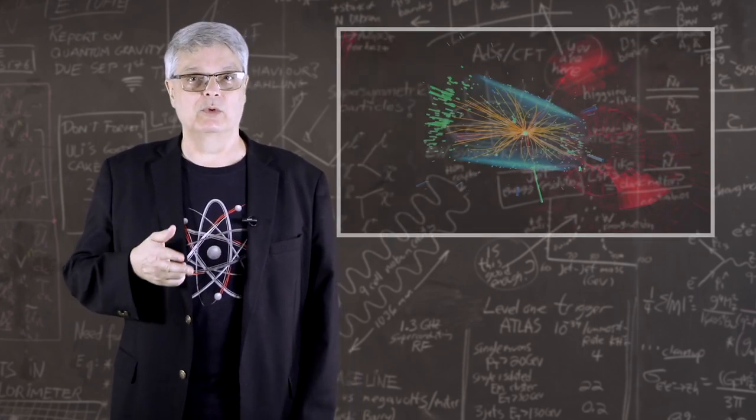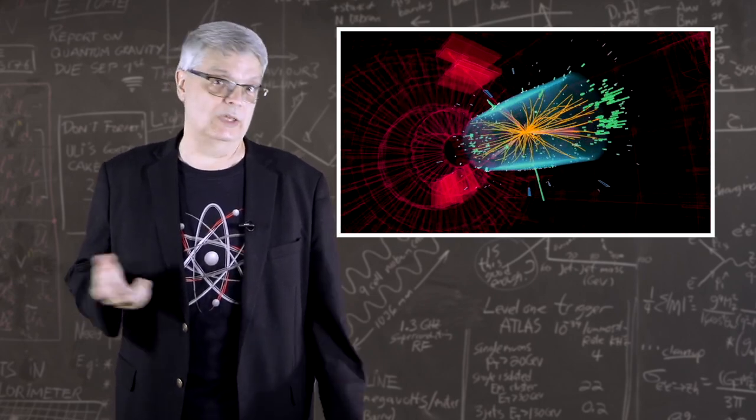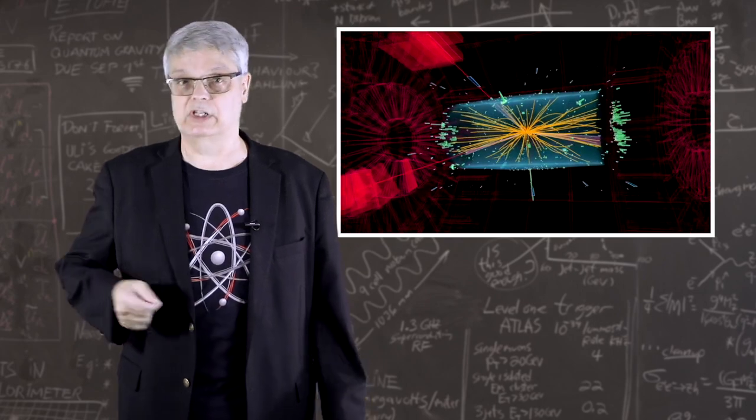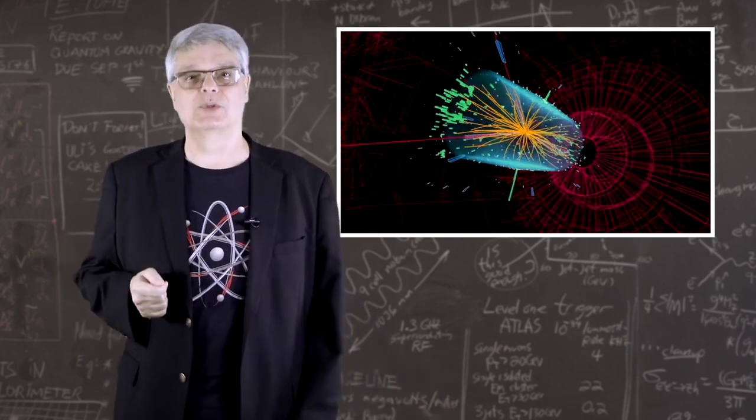So that's how the Higgs boson discovery was done back in 2012. Scientists looked for events with pairs of high energy photons and also pairs of W and Z bosons without requiring that the particles had their expected mass. And wonder of wonders, the Higgs boson was discovered.